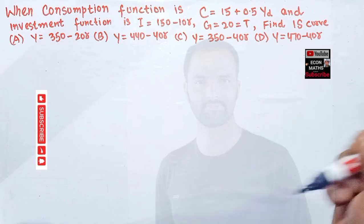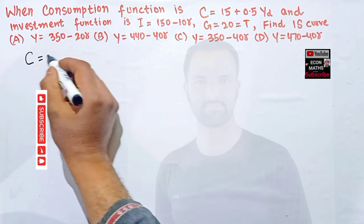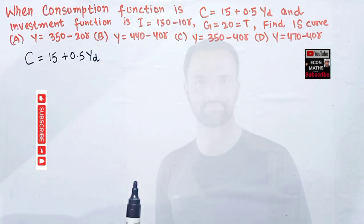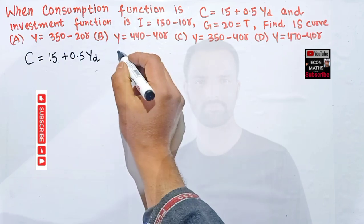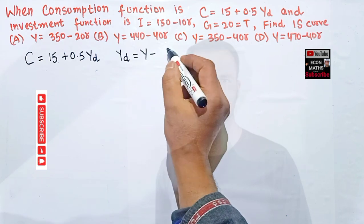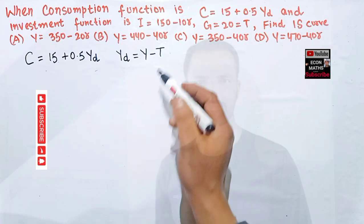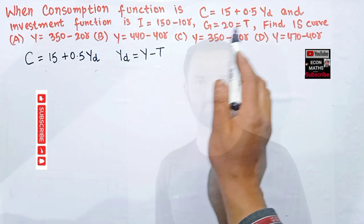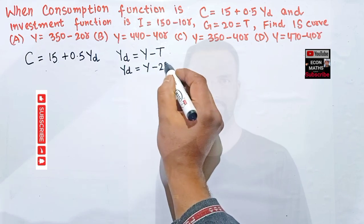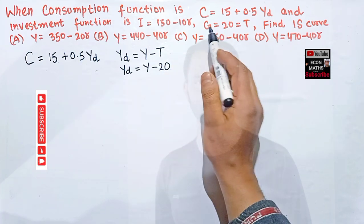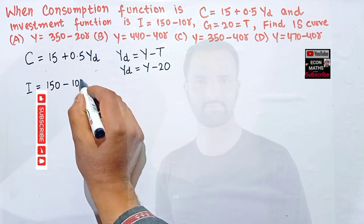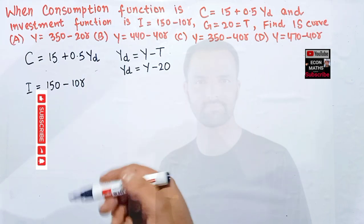We are given the consumption function C = 15 + 0.5 Y_d. Here Y_d denotes disposable income — that is, total income minus taxes. Since T = 20, we can write Y_d = Y - 20. We are also given the investment function I = 150 - 10r, which is a function of the rate of interest.